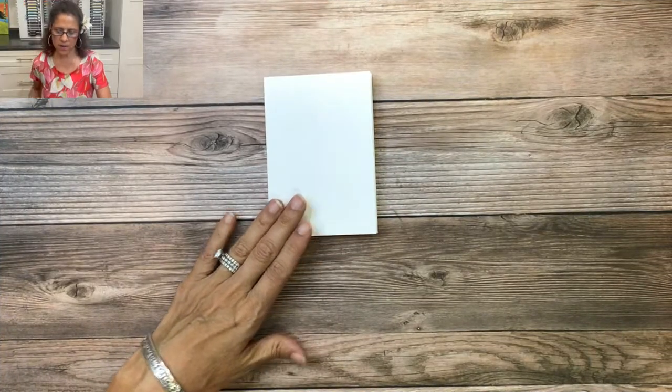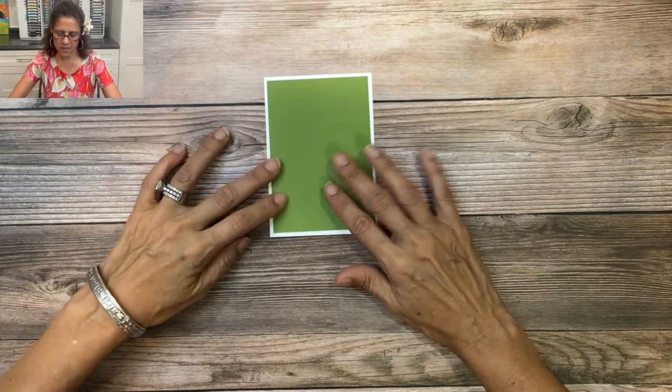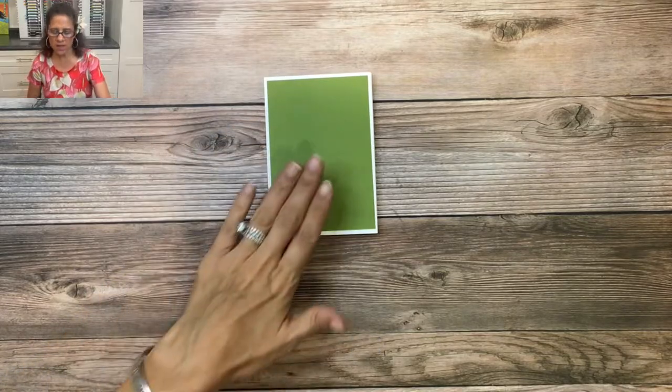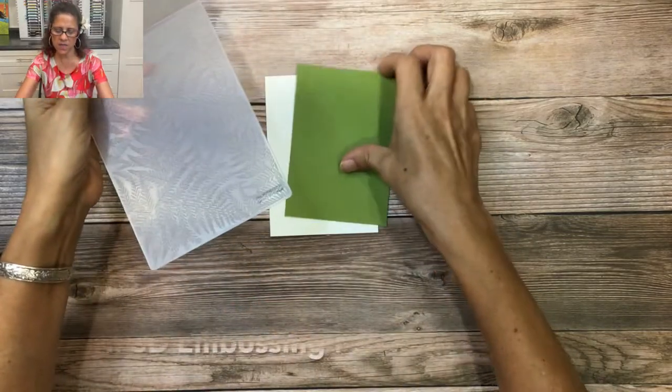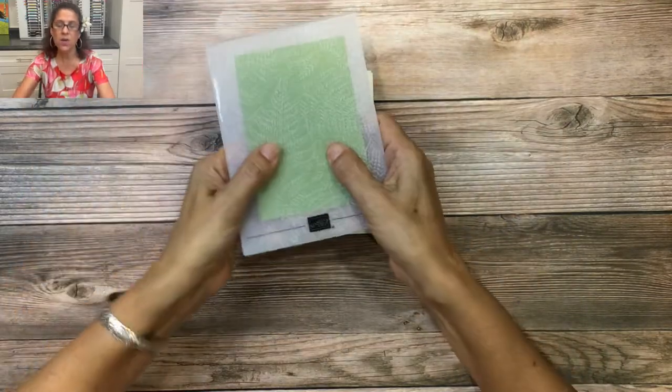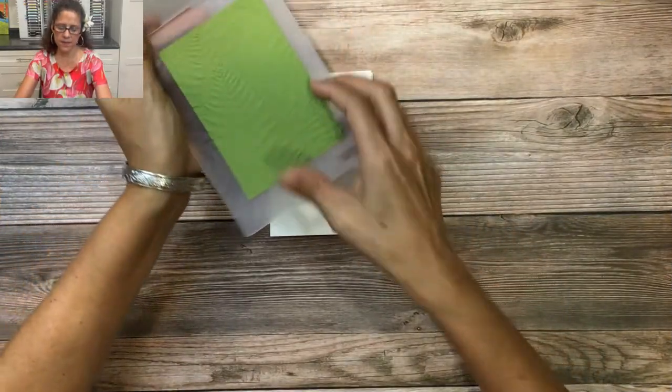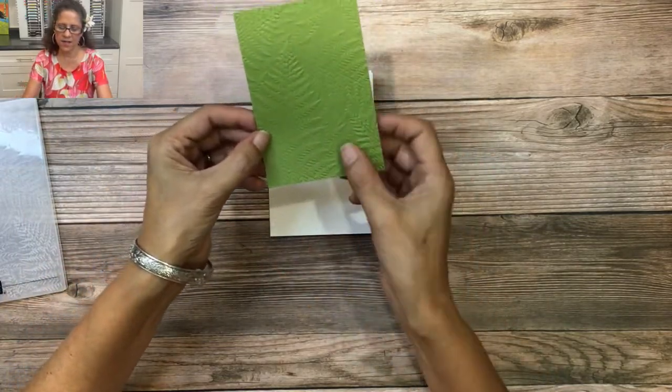Let's begin with a basic white note card, and we're going to add a layer of old olive cardstock. This is three and a quarter by four and three quarter inches. I want to add some texture, so we're going to be using our Fern 3D embossing folder. Let me place this in the folder, and then I'm going to run this through my stamp and cut and emboss machine. And then let's open it up, and now you can see that it has this beautiful fern pattern on it.